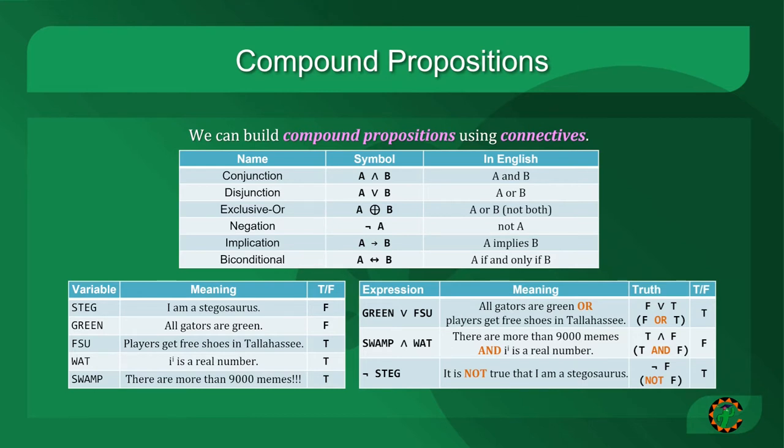Green disjunction FSU would be read as all gators are green or players get free shoes in Tallahassee. To assess the truth value, we see that we have a false statement OR'd with a true statement. For OR, if either of the propositions is true, then the compound proposition is true.